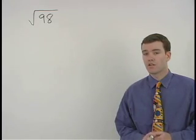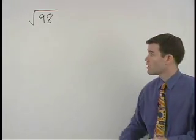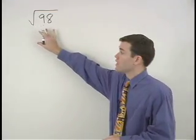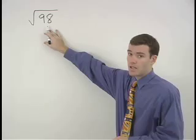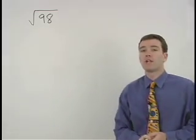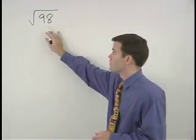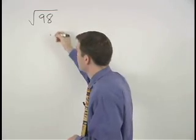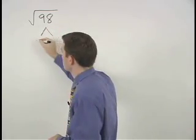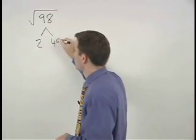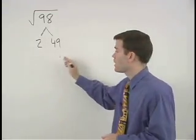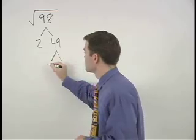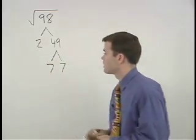To simplify a square root where the number inside the radical is not a perfect square like the square root of 98, we start by making a factor tree for the number inside. 98 is 2 times 49, and if you know your perfect squares you'll recognize 49 as 7 times 7.